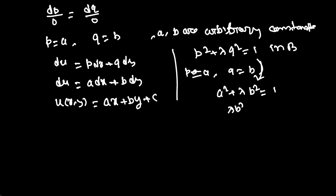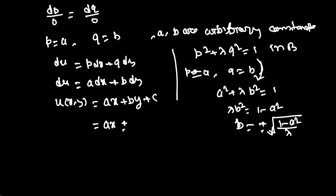So λb² = 1 − a², which gives b = ±√((1 − a²)/λ). Therefore u(x,y) can be written as u(x,y) = ax ± √((1 − a²)/λ) · y + c.